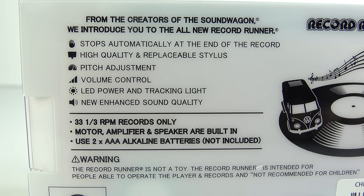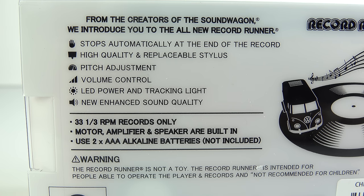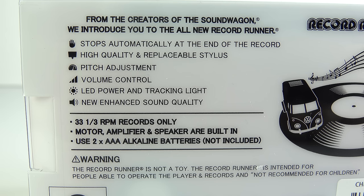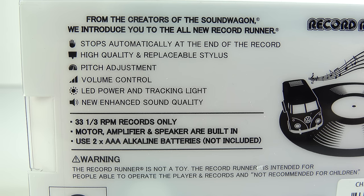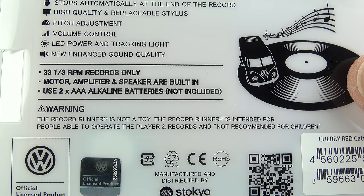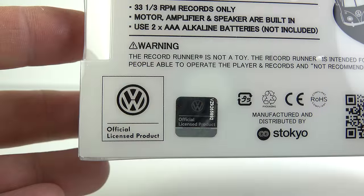Although according to the back of the box it does come from the creators of the original Soundwagon which was out in the 1970s. Some of the highlight features are that it will stop automatically at the end of the record, you can replace the stylus, it's got new enhanced sound quality, it plays 33 and a third RPM records only, and it's powered by two AAA batteries. Despite appearances they state that the Record Runner is not a toy and it's also interesting to note this is an officially licensed VW product with a hologram and everything.